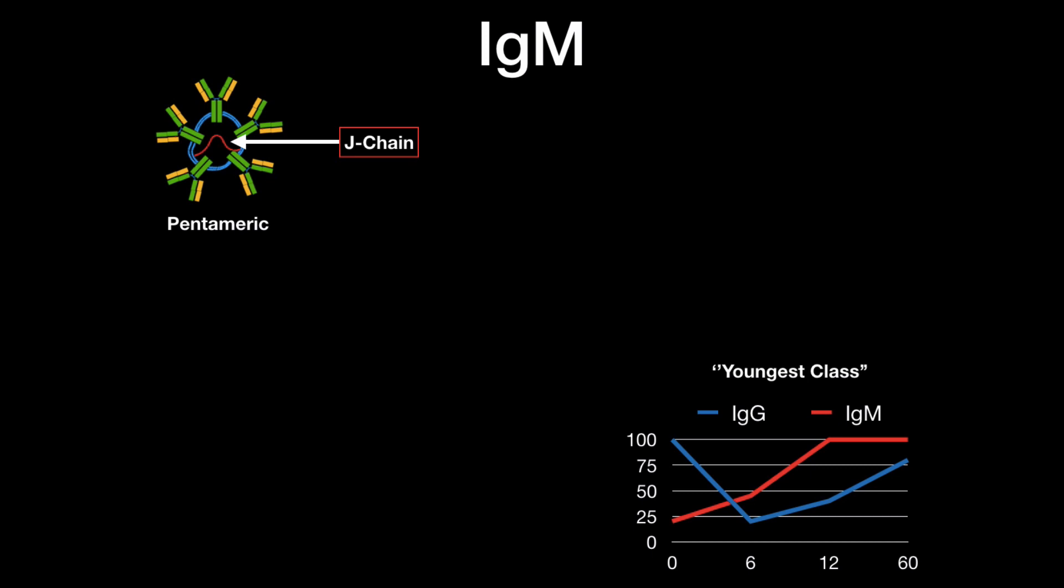IgM is a special one. It's mostly found as a pentamer bound together by a J-chain, as you see here. You can also find these as a monomer bound to the surface of B-cells. IgM is what we call the youngest class because the fetus can actually produce those on their own. And you can see it doesn't really start from zero concentration when we're born. Cool, right? It's most probably because IgM can be produced without the help of T-cells. I'll get more into that later.